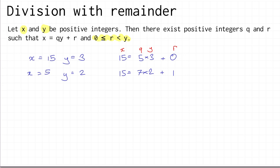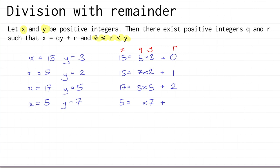If you had x equal to 17 and you want to divide by 5, you can't do it exactly, but you can say 17 equals 3 times 5, so a quotient of 3 and remainder of 2. And if you try to divide something by something larger than it — say x equal to 5 and y equal to 7 — you still get 5 equals 0 times 7 plus a remainder of 5. So you can always do division with a remainder, no exceptions, as long as you've got two positive integers.